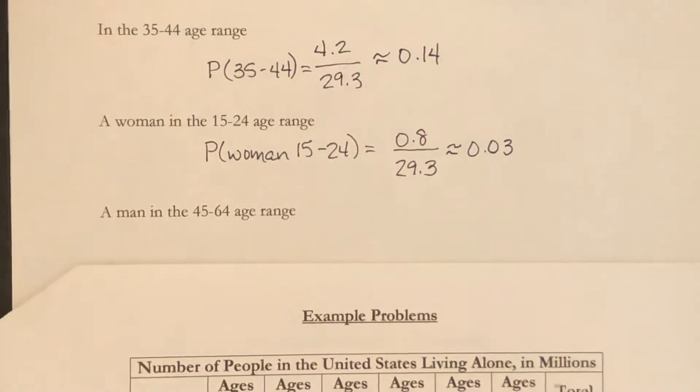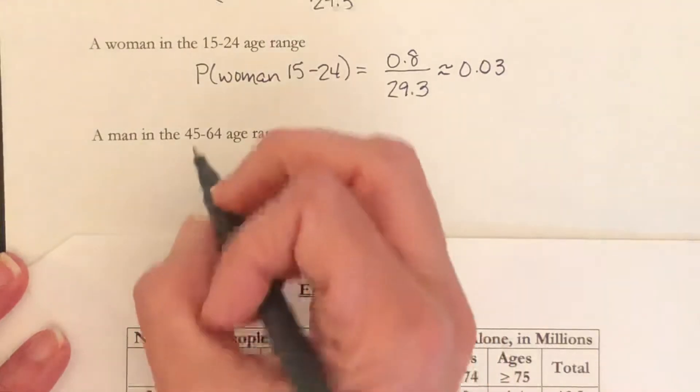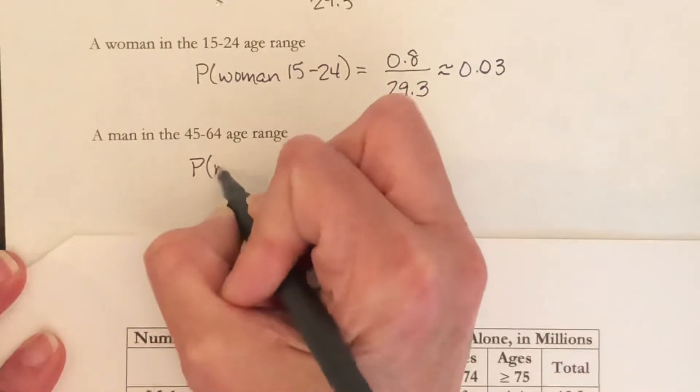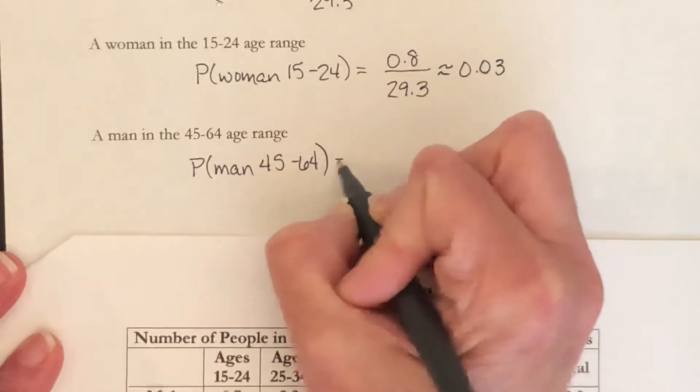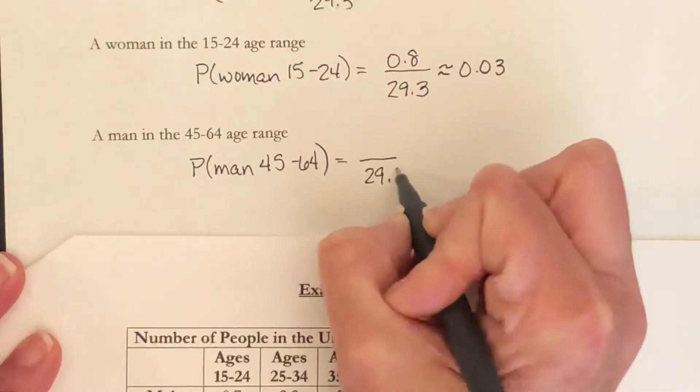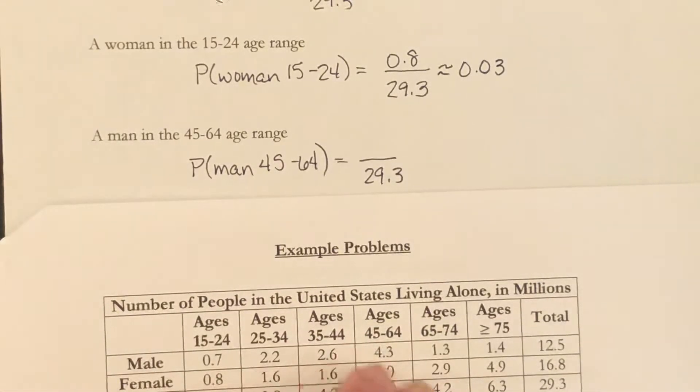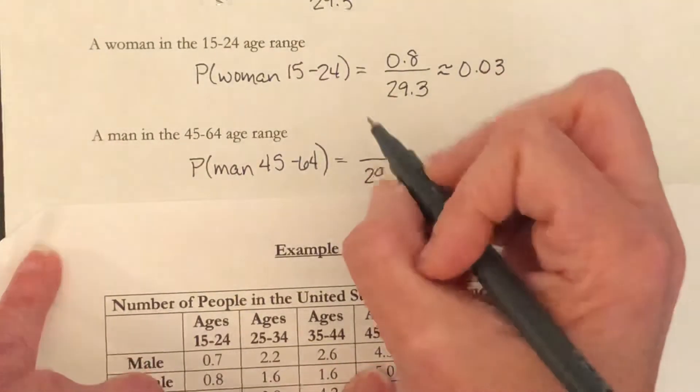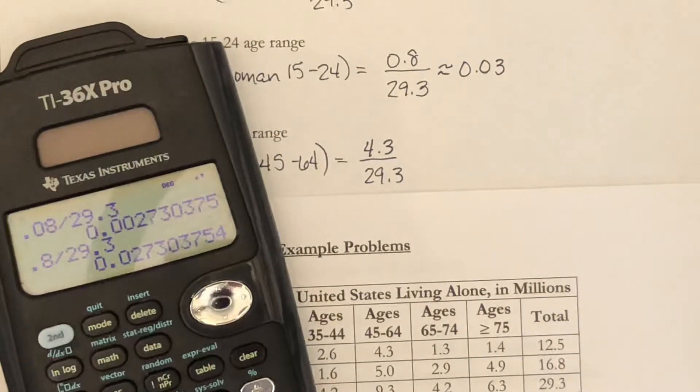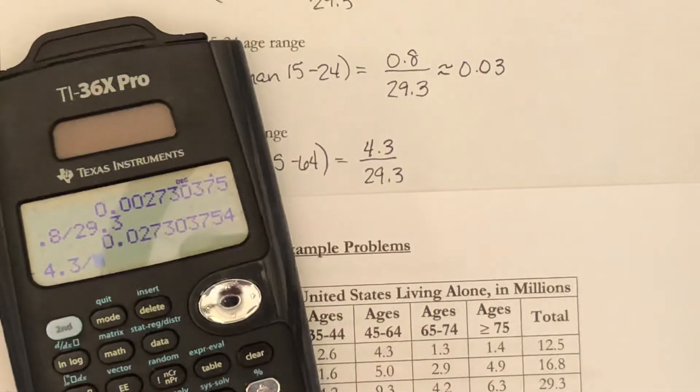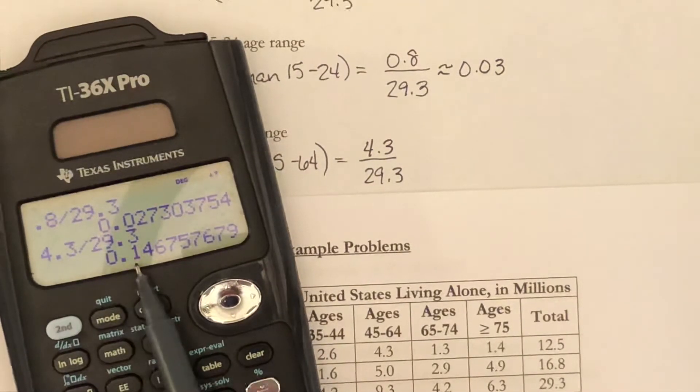And then one more. What's the probability of having a man in the 45 to 64 range? This is over 29.3 million people, and a man in the 45 to 64, that will be 4.3. Do that division and you get approximately 0.15.